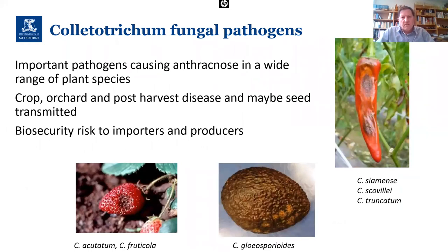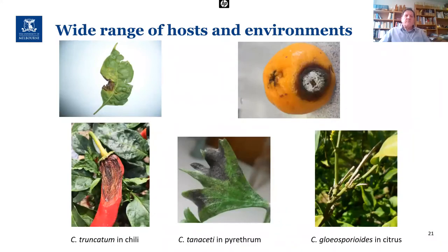Colletotrichum fungal pathogens are a very important group — they're in the top level of pathogens causing disease worldwide, infecting such a broad range of plant species. They infect crops, orchards, cause post-harvest disease, and can be seed-transmitted. They are a very important biosecurity concern for importers and producers. Colletotrichum species can exist in a wide range of hosts and environments — from pyrethrum growing in Tasmania to chilies in the tropics, and they're also a very important citrus pathogen.